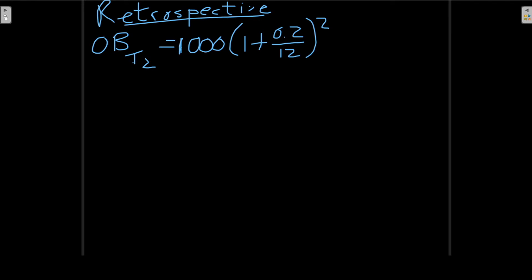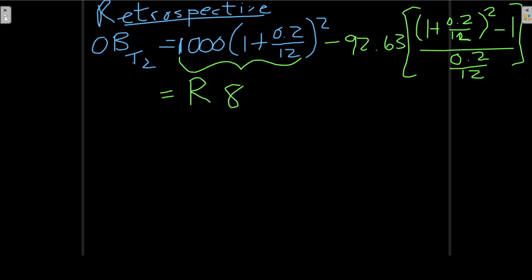And then I subtract from that the future value of an annuity. I've already made two payments of 92 rand 63 cents. And I subtract the value of those two payments. And I subtract from the first part here. So I'm making use of the future value formula for an annuity. So it's payment which we worked out in the first part of the lecture. And now I use the formula for the future value of an annuity. Okay and if you subtract these two from each other I got an outstanding balance of 846 and 81 cents. That's the retrospective method.